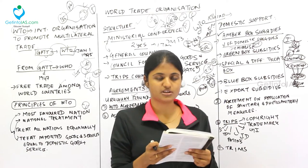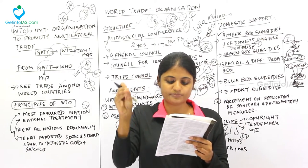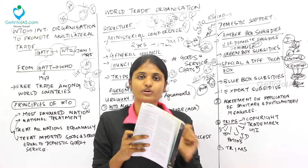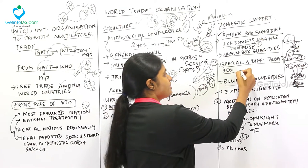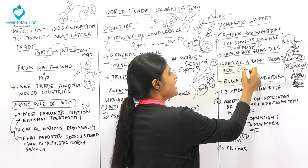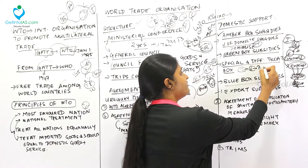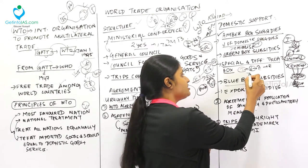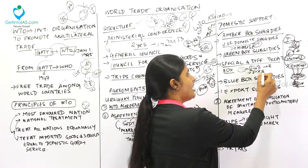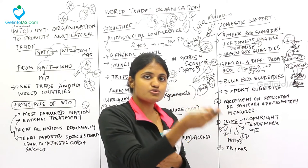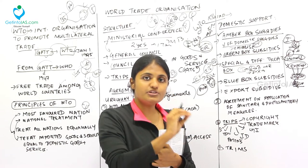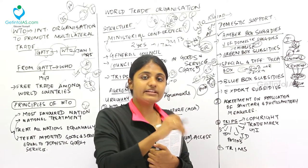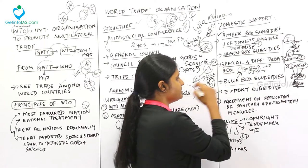Blue Box subsidies are direct payments under production-limiting programs. Unlike amber box subsidies where the government encourages farmers to produce more, under Blue Box subsidies the government pays farmers not to produce — compensating them for losses — because excess production distorts trade. These payments are made so farmers don't overproduce.